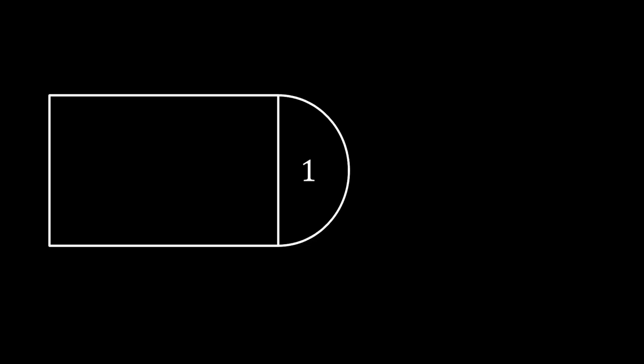We're going to start our problem with a rectangle. Then, we're going to use two semicircles. The diameter of the first semicircle is going to be equal to the right height of our rectangle, and the area of this semicircle will be equal to 1. Then, on the upper side of our rectangle, from the upper right corner, we're going to construct another identical semicircle, as you can see on the sketch.